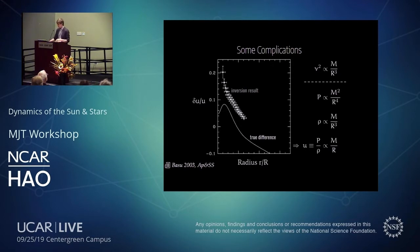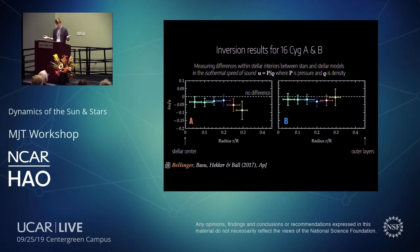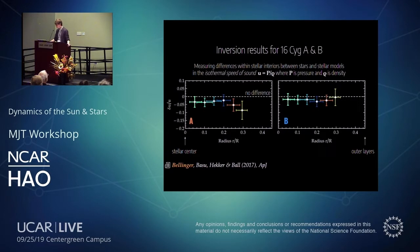Basu showed in 2003 that differences in mass and radius between the reference model and the actual star impose a systematic error in the inversion result. We must either correct for this by averaging over masses and radii, or perform dimensionless inversions. Both approaches have been tried. Here's a science result: we applied these asteroseismic inversion techniques to 16 Cyg A and B — some 25 years after the initial simulations. For 16 Cyg B, a very solar-like star, we get broad agreement with well-localized averaging kernels.